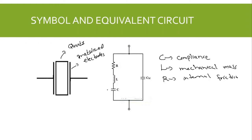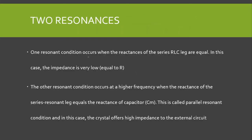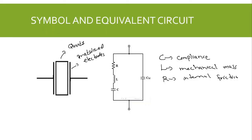Because we have a series resonance leg in parallel with the shunt capacitance Cm, we have two resonance conditions. The first resonance condition occurs when the reactances of the series leg are equal to each other — this is series resonance. In series resonance, the impedance is very low and equal to R. Series resonance occurs at the lower frequency.